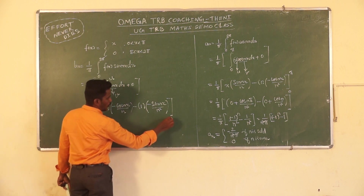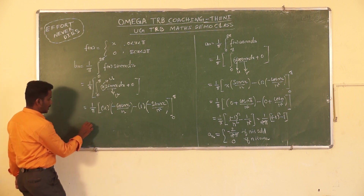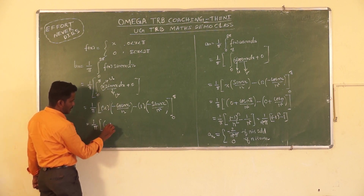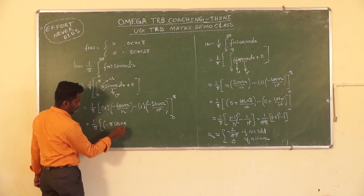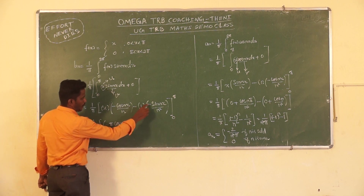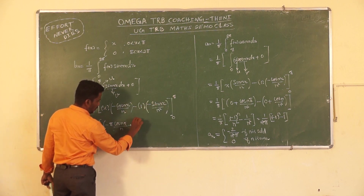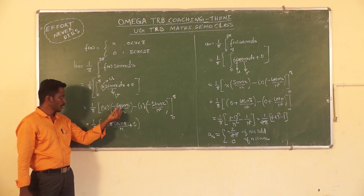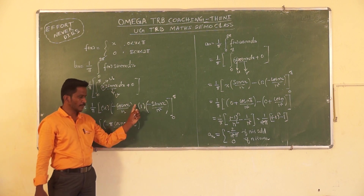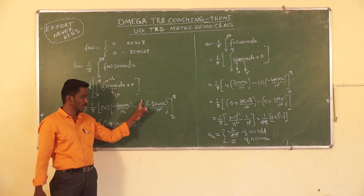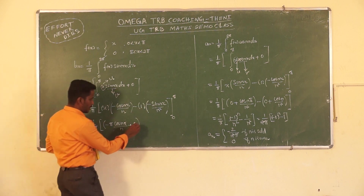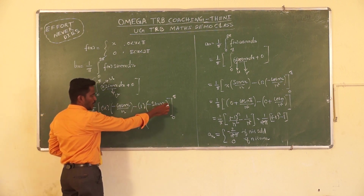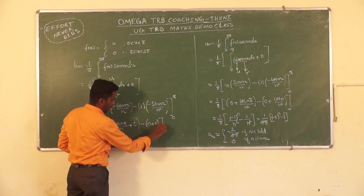Applying the limit from 0 to π, multiplied by (1/π). For the upper limit π: the first term is −π·cos(nπ)/n, and the second term is +sin(nπ)/n². For the lower limit 0: x = 0 gives 0 for the first term, and sin(0) = 0, so the lower limit contribution is zero.